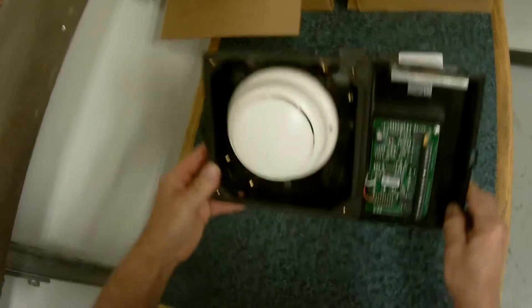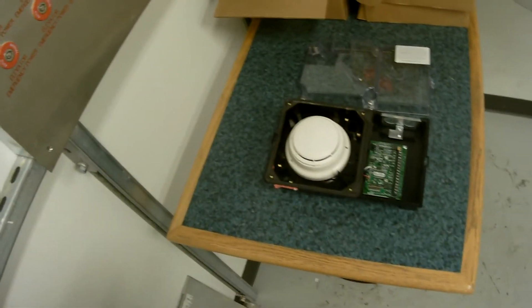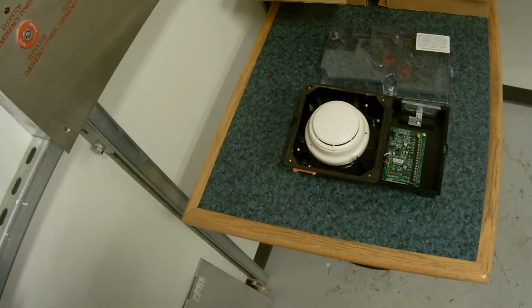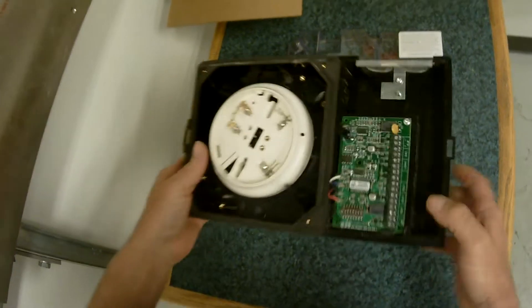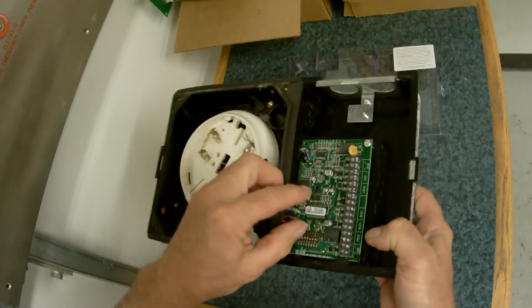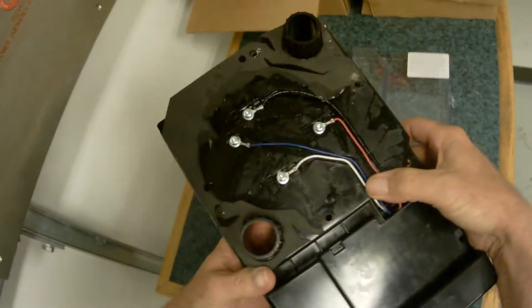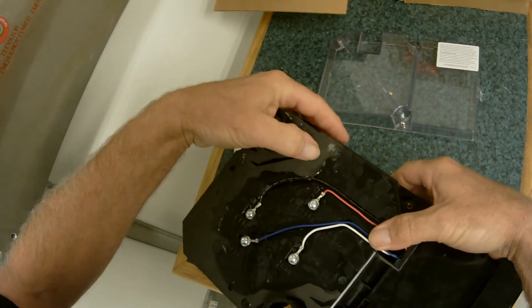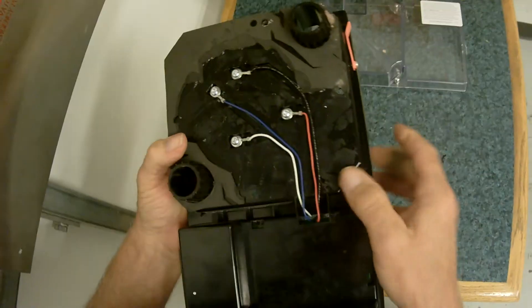What I found was that these four wires here connect to the board, they channel through here, and I peeled all the rubber backing away from this board. You can see that these wires all go through little channels here.